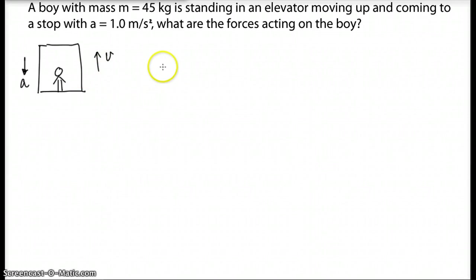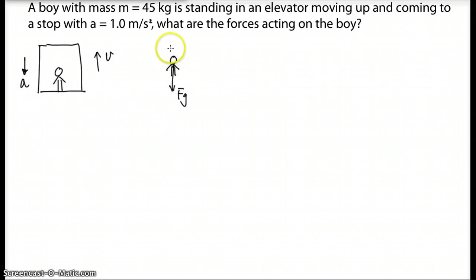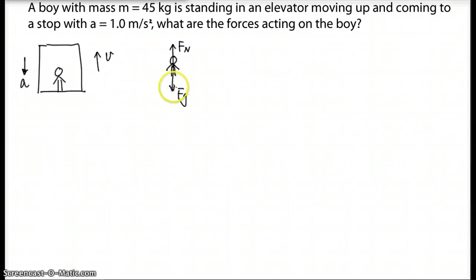Let's draw a free body diagram — we take the student separated from its surroundings. There should be two forces as long as the person is on Earth. There is Fg (gravity), and whenever the person is in contact with something, we may have a normal force or friction. In this case we definitely have a normal force Fn going up, but no friction since there's no relative motion between the person and the elevator.